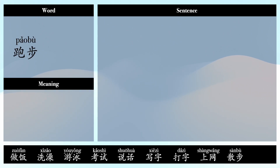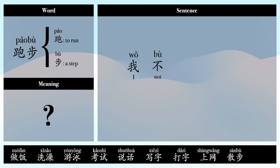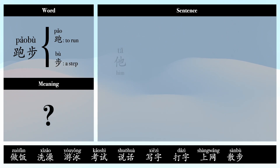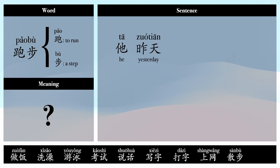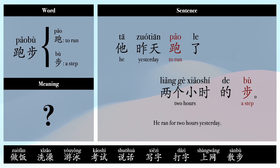跑步 — 跑: to run, 步: a step (i.e., to run/jog). Example sentences: 我不喜欢跑步。(I don't like to run.) 他跑步跑得很快。(He runs very fast.) 他昨天跑了两个小时的步。(He ran for two hours yesterday.)